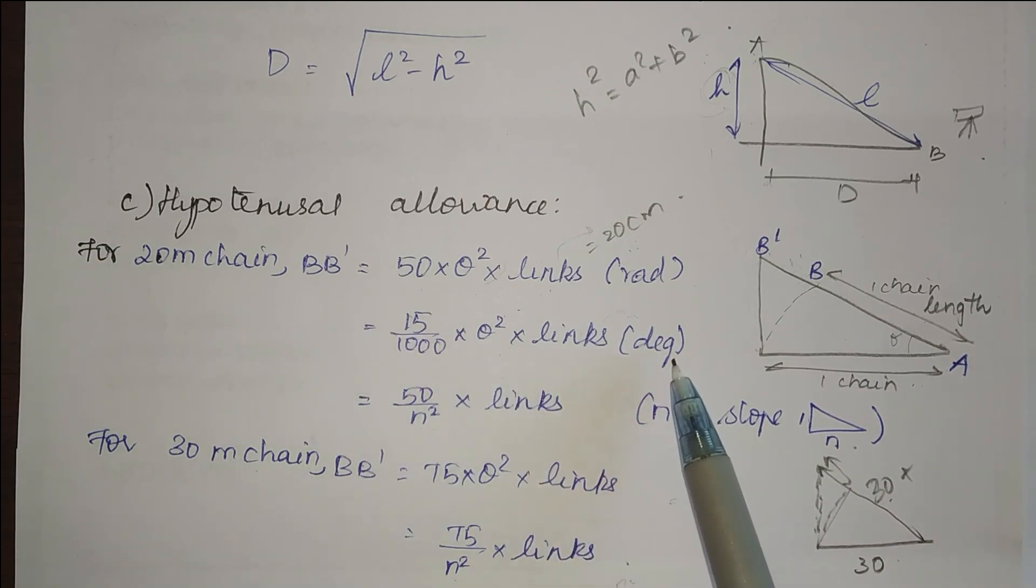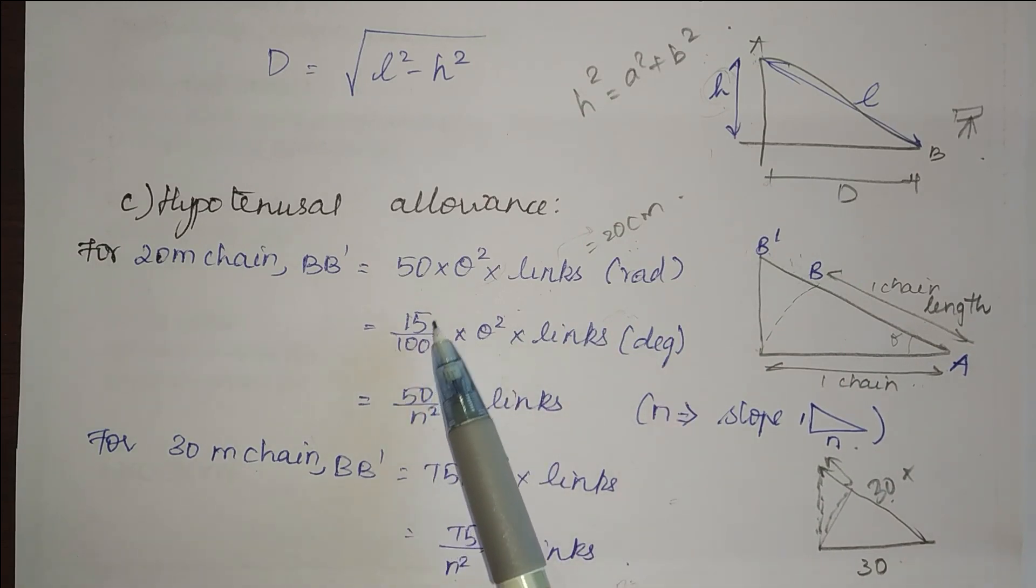If my theta is in degrees, then the formula changes to 15 by 1000 into theta squared. If I don't have the angle but I only have the slope of 1 in n, then I can use this formula of 50 divided by n squared into links, not number of links, the distance covered by one link.